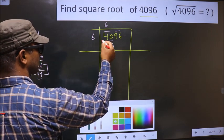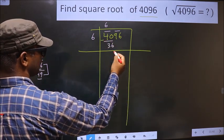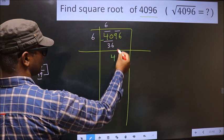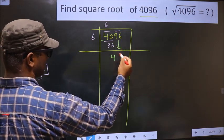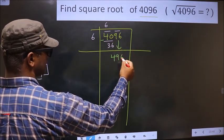Now you subtract here. So 40 minus 36 is 4. Now this pair as it is, you bring it down, making it 496.